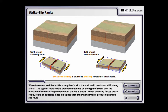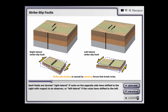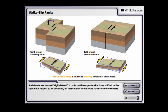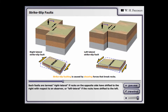When shearing forces break rocks, rocks on opposite sides slide past each other horizontally, producing a strike-slip fault. Such faults are termed right-lateral if rocks on the opposite side have shifted to the right with respect to an observer, or left-lateral if the rocks have shifted to the left.